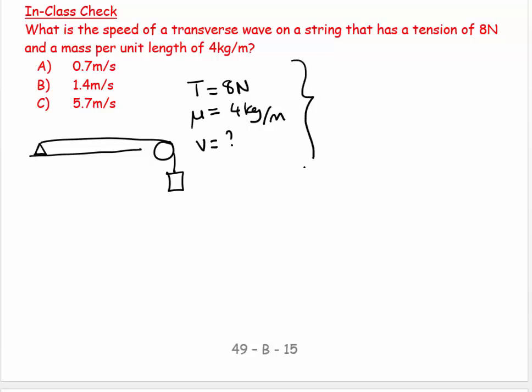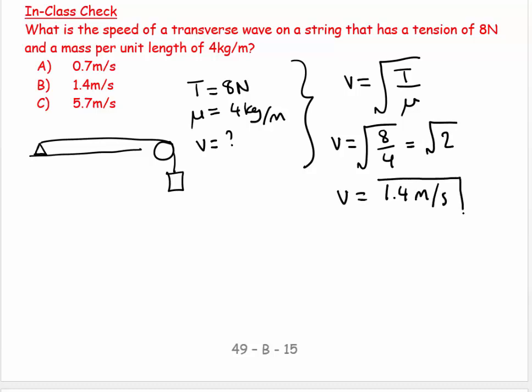And then I want to know what the velocity is. So if you know your equations, this will recall, V is equal to square root of T over mu. And then we can turn around and say, V is equal to the square root of eight over four, which equals the square root of two. So V is equal to 1.4 meters per second. So that works out nicely.